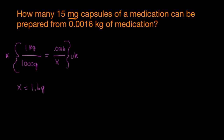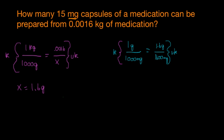What is going to be our known? We are going to set up the fraction equal to each other again. Our known is that 1 gram has 1,000 milligrams. We want to know how many milligrams are in 1.6 grams — and that is our unknown. When we cross multiply and divide, that is going to give us 1,600 milligrams. So in 0.0016 kilograms, there is 1,600 milligrams.